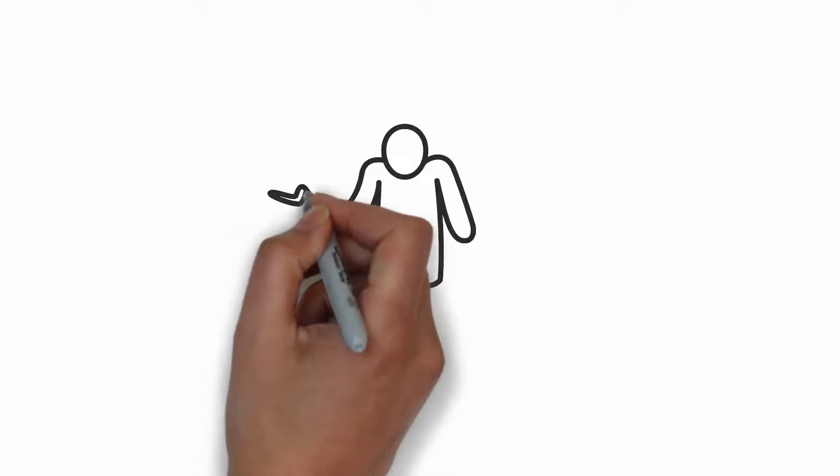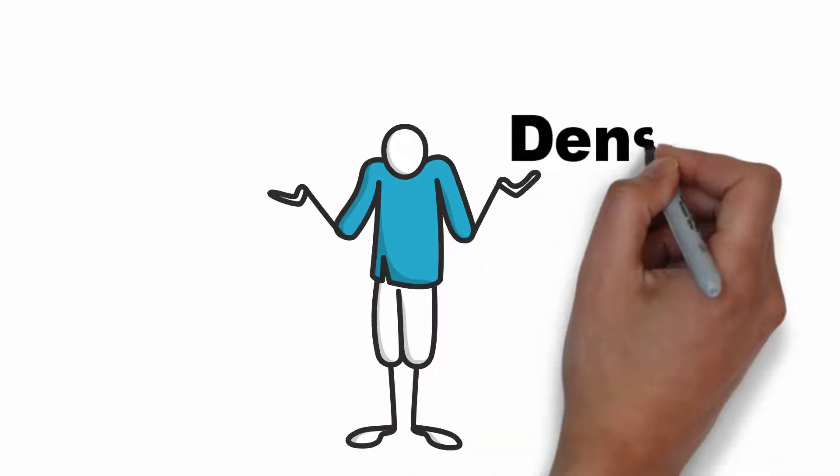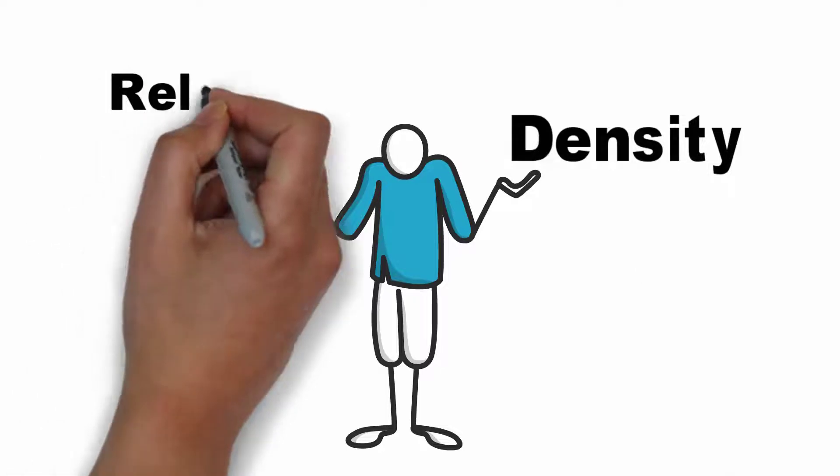Greeting everyone and welcome to Yazankom channel. In this video we will be talking about three important parameters which are related to each other: density, relative density, and API gravity.